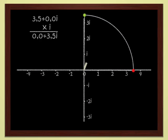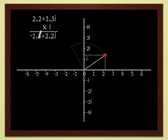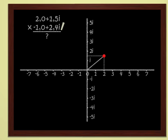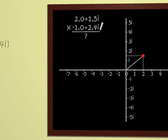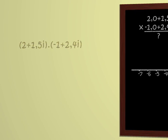And finally, we can multiply any 2 complex numbers with no problem whatsoever. Let's try, for instance, to multiply 2 plus 1.5i and negative 1 plus 2.4i. We proceed as usual. We first multiply by 2, and then by 1.5i. Then we add the results. Therefore, we get...